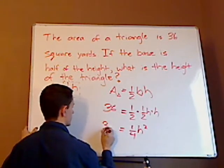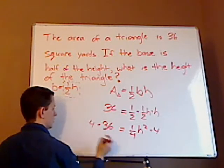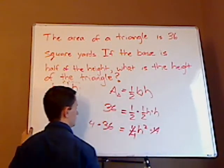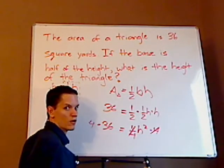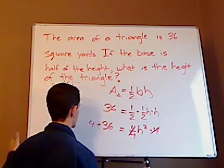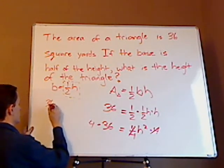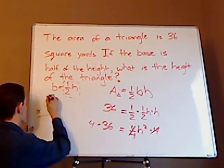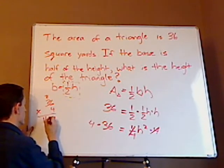H times h is h squared, and this equals 36. I'm going to multiply both sides by 4 — I just multiply by the reciprocal and it cancels out, because 4 times one-fourth is 4 over 4, which is just 1. So that cancels. 4 times 36: 6 times 4 is 24, carry the 2, 4 times 3 is 12, plus 2 is 144.